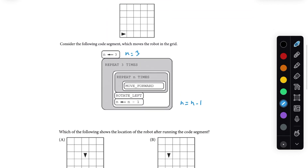Let's run it and see where our robot ends up. We set n equal to three right off the bat, then we repeat the outer logic three times. The first part of the outer loop is an inner loop where we repeat n times. Since n is equal to three, we move our robot forward three times. It started in the bottom left square and moves one, two, three times. We're done with the first part of the outer loop for the first iteration.